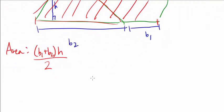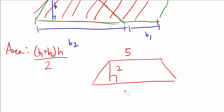Let's say we have a trapezoid, the height is 2, the bases are 5 and 8. The area is going to be 5 plus 8 times 2 divided by 2. The 2s cancel out, so we have 5 plus 8 times 1, or the area is 13.